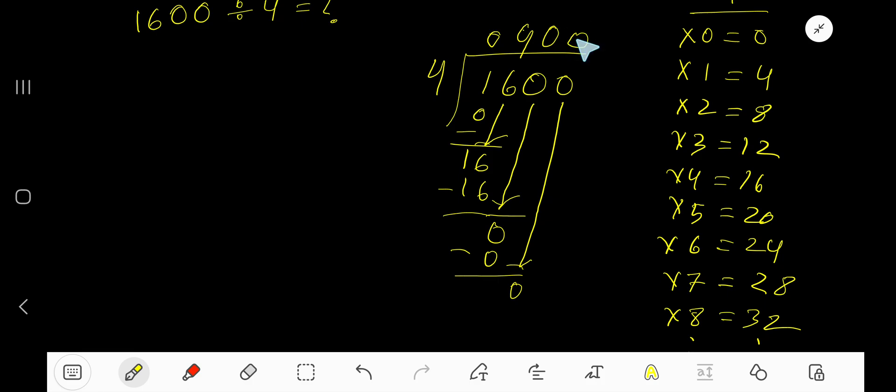As our remainder is 0 and there is no digit in the dividend now, we are done. So our answer is 0, 4, 0, 0, which means 400.